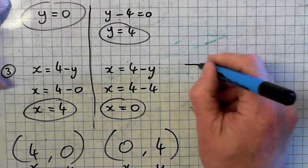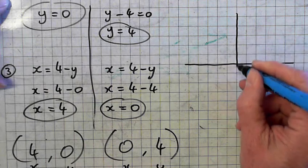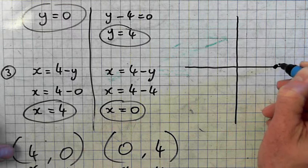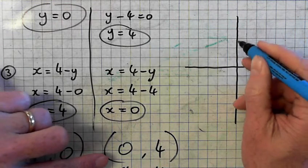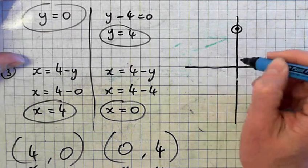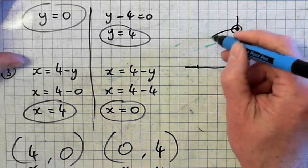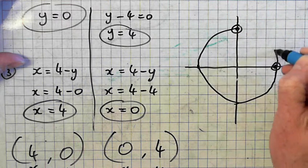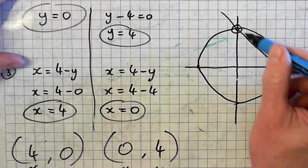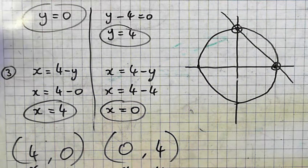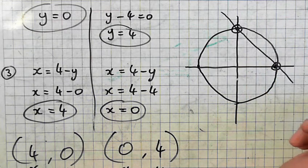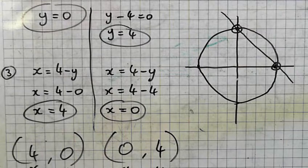So again, to give you an idea of what that looks like. So 4, 0 is there. And 0, 4 is there. The circle looks something like that. And that's the line, that's the line equation there. And that's the circle equation, that's the circle. And that's the two points where they intersect, they cross each other.